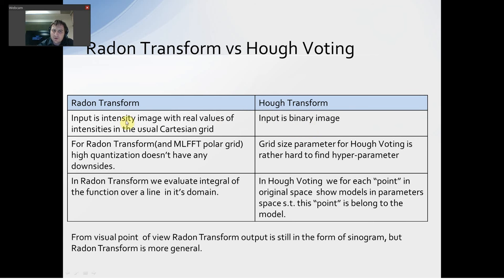Hough transform input is a binary image. For Radon Transform, input is intensity image with real values. For Radon Transform, high quantization doesn't have any downside. For grid size parameter for Hough voting, it is rather hard to find a proper parameter, because this problem of grid size for Hough voting should be tuned. And for Radon Transform, it's not.